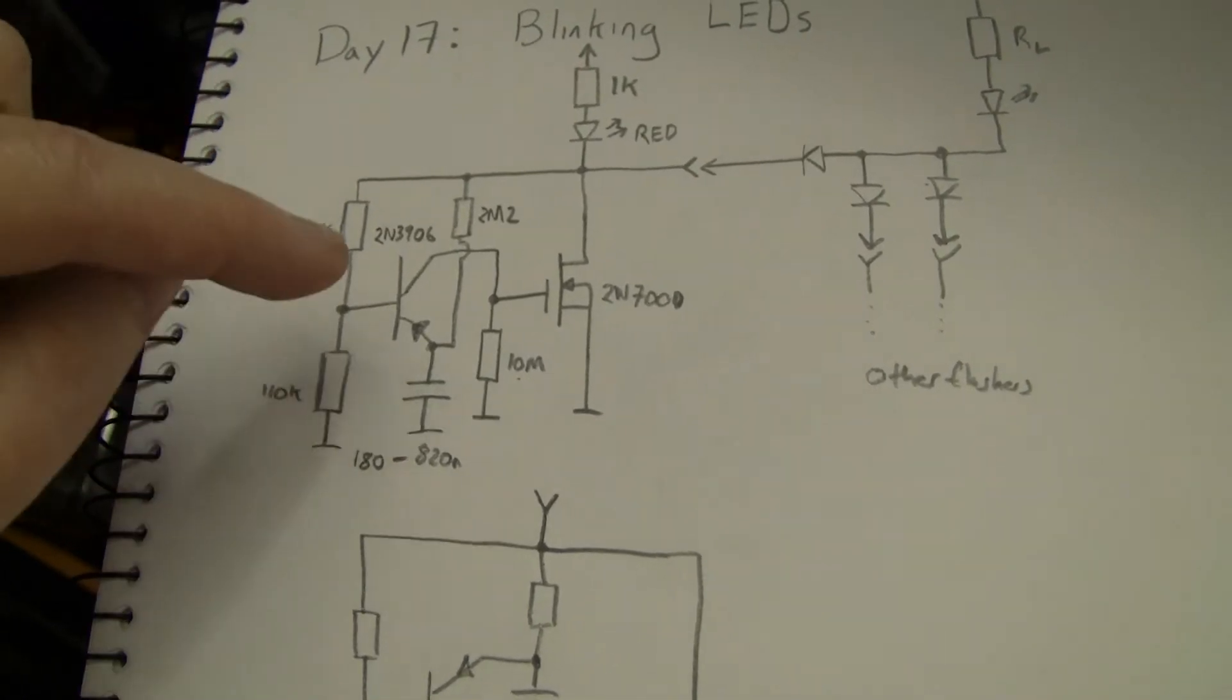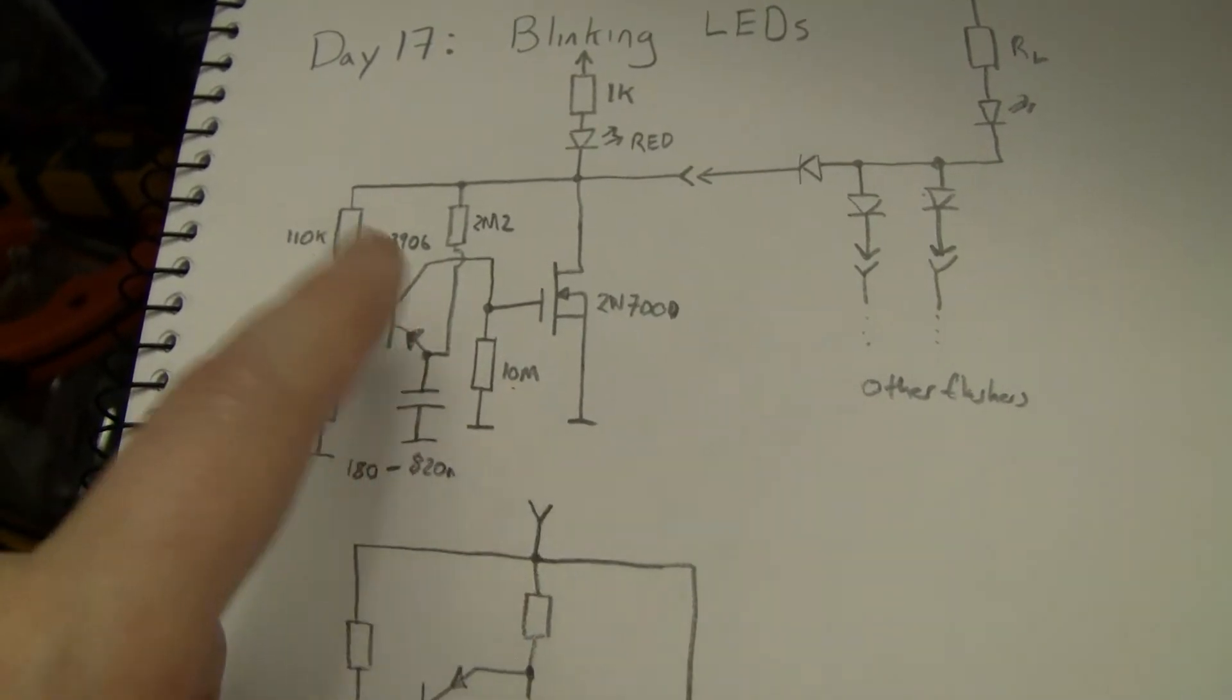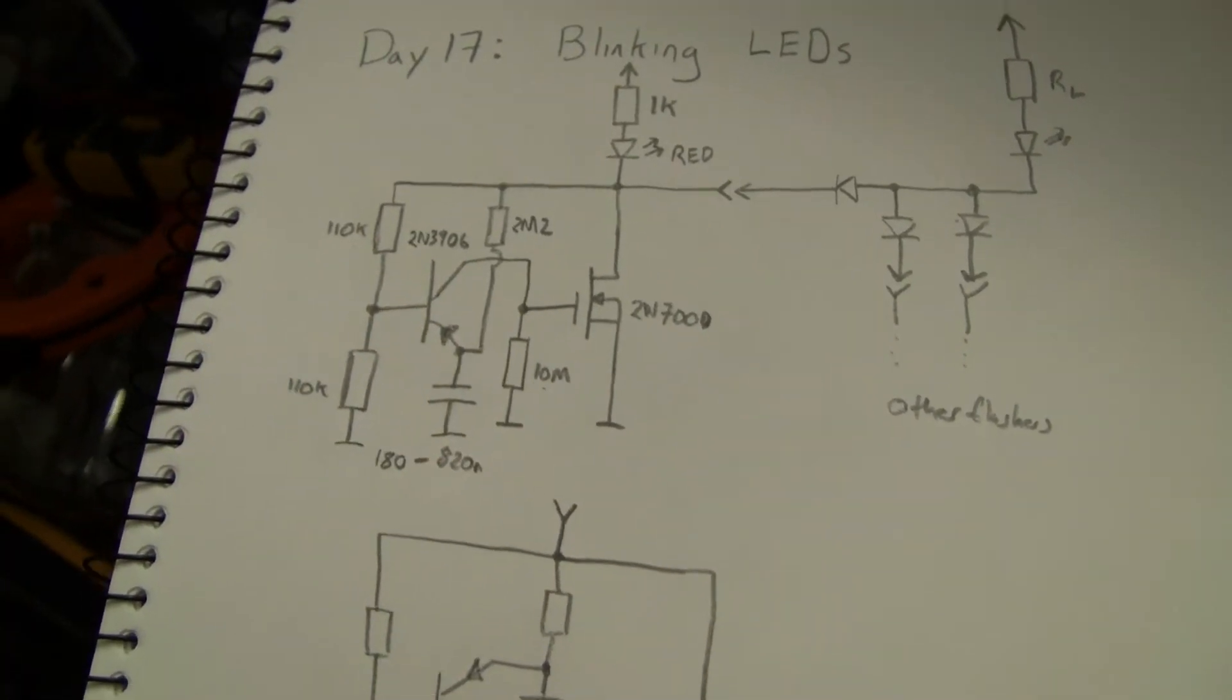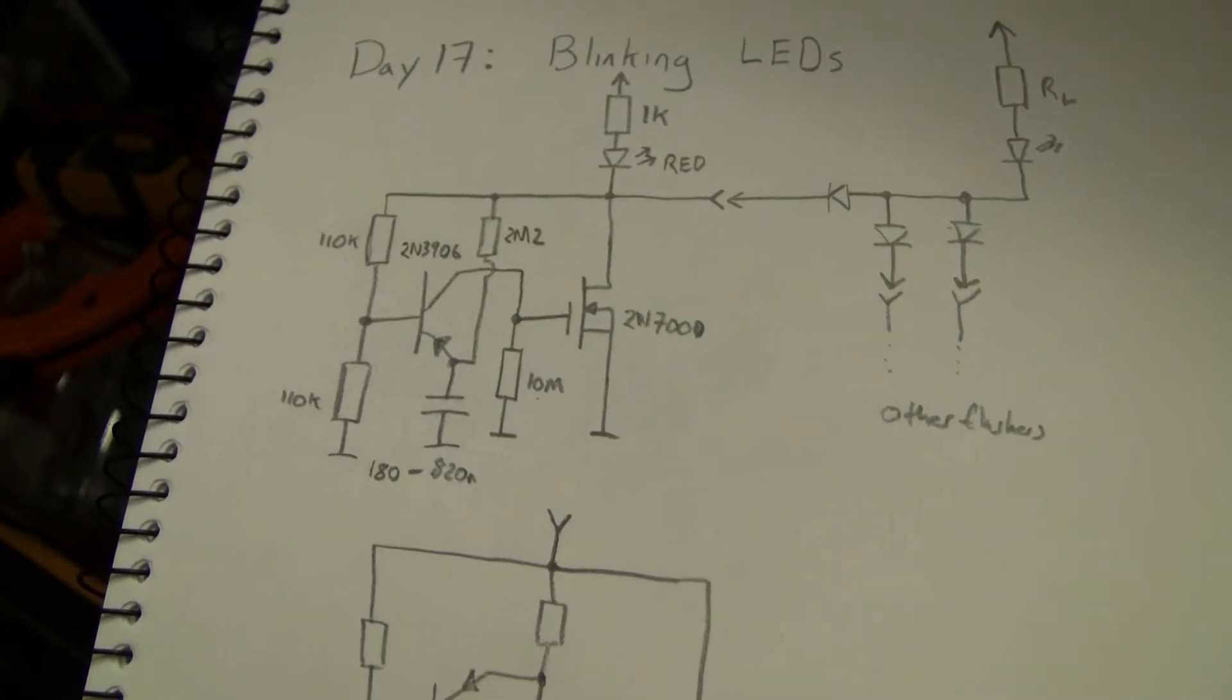These resistances can probably be a bit larger. It depends on the gain of the PNP. I mean this is just a 2N3906. Again it's not critical at all, you can pretty much use whatever bench sweepings you happen to have lying around and it will work.